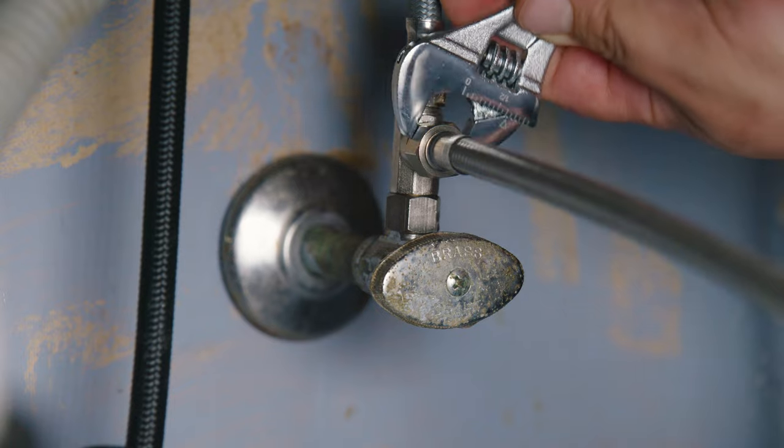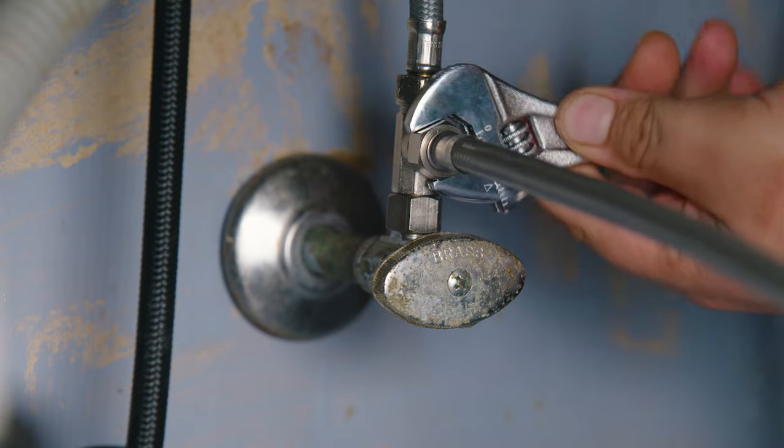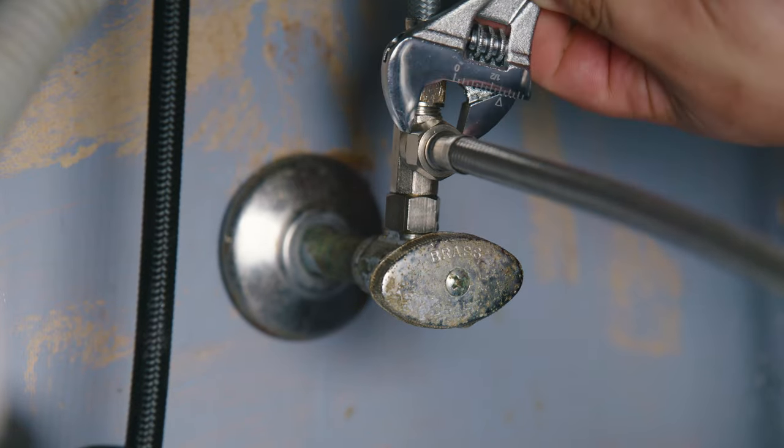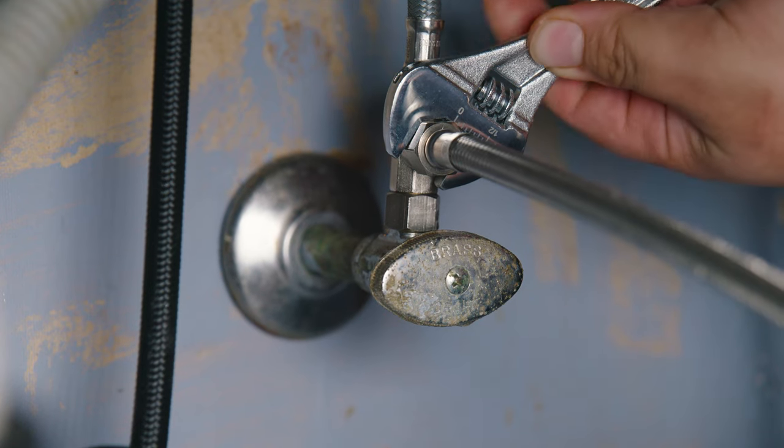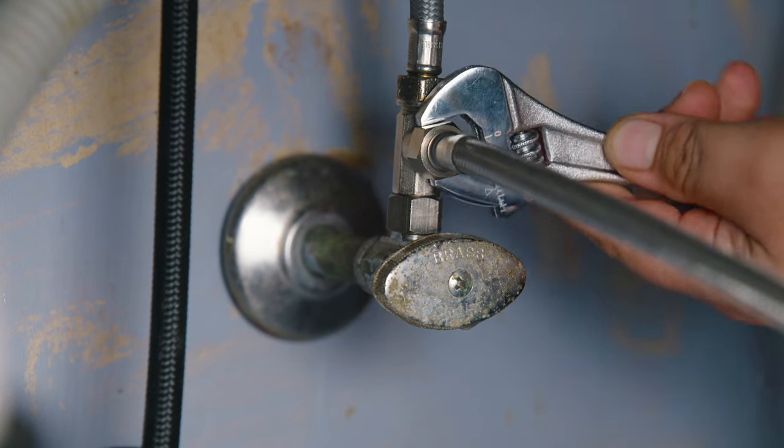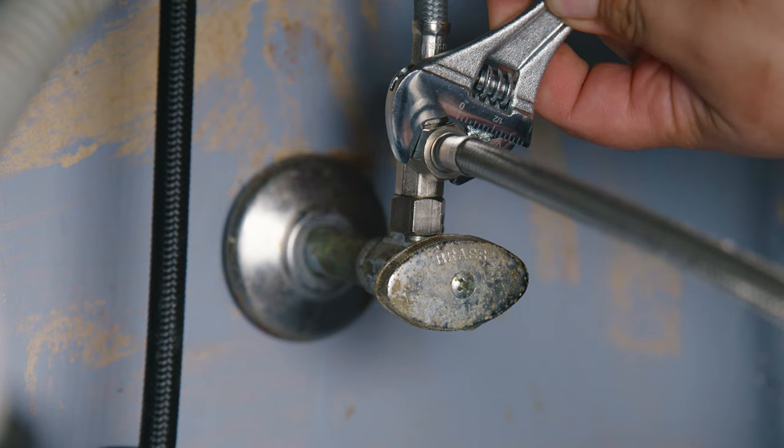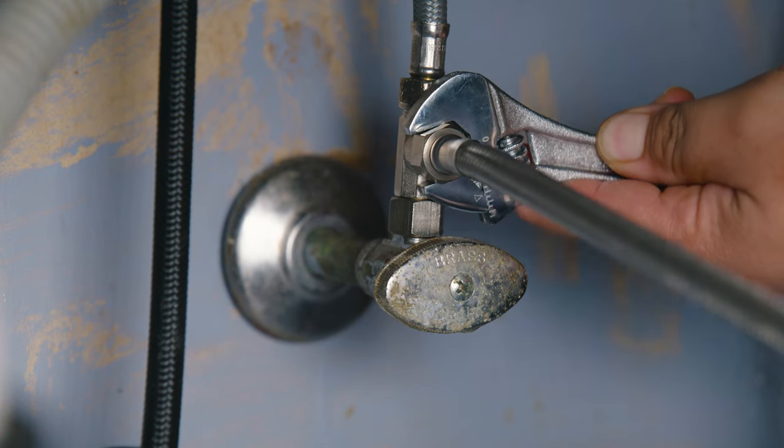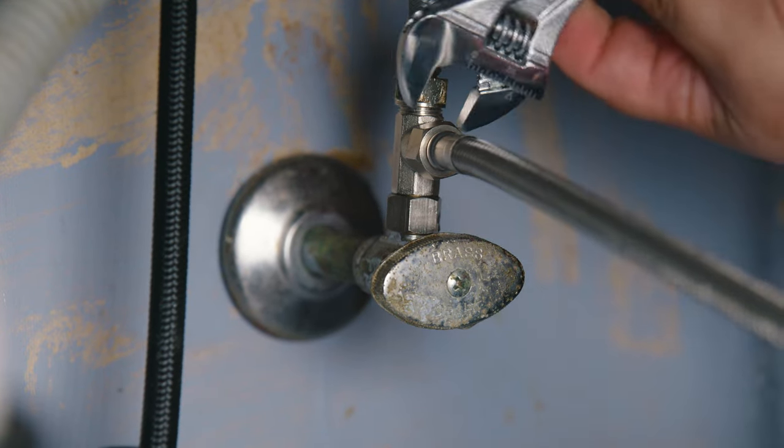In some cases, you can use plumber's tape. If you notice any leaks afterwards, adding plumbing tape goes a long way. Extra tightening also does. Remember always never to over tighten because you don't want to break the seal or the grooves in any of the hoses, connections, or adapters.